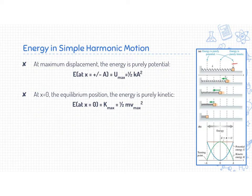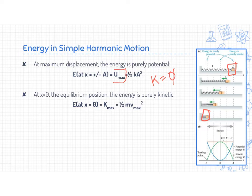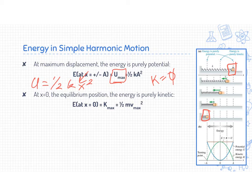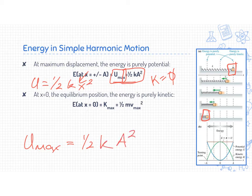If we're at our maximum amplitude — these two extreme points — kinetic energy is zero. That means 100% of our energy is potential energy, and we know potential energy is ½kx². But at this point, instead of using x, we're displaced the amplitude away. So we have this new formula: U_max equals ½kA², where it's A squared because it's at the amplitude.